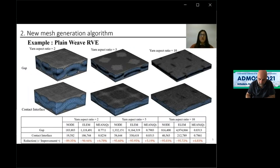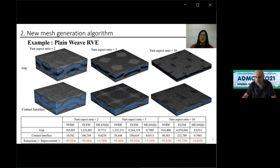Here's another example of plain weave RVEs with different yarn aspect ratios. The first row is yarn mesh by inserting a small matrix gap between yarns, and the second row is the RVE with interface mesh between yarns. The mesh with gap insertion requires millions of elements. With interface elements, we have a 90% to 95% reduction both in number of nodes and number of elements, and also slightly improved mesh quality.